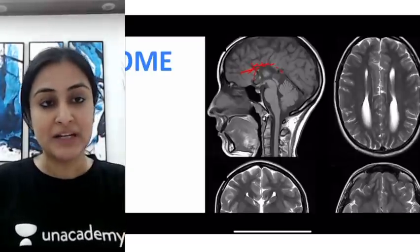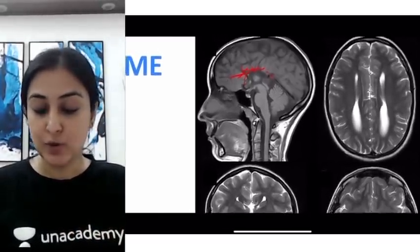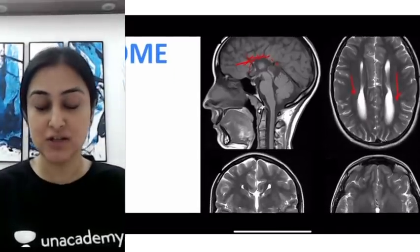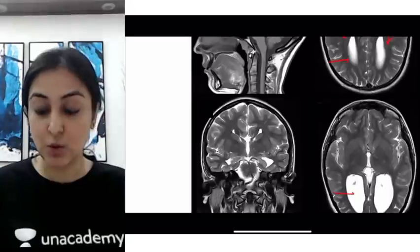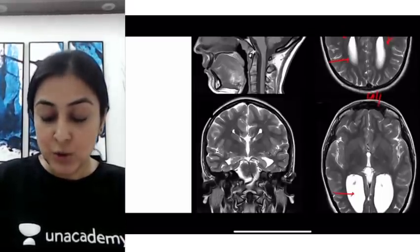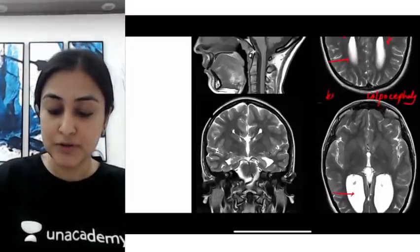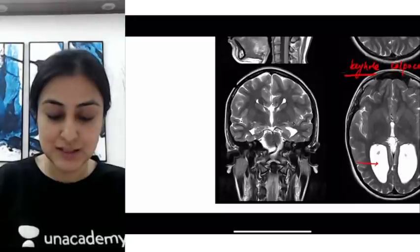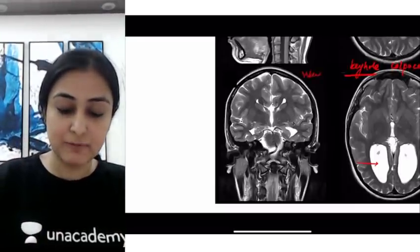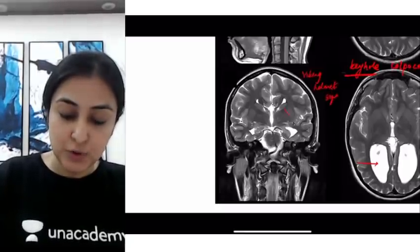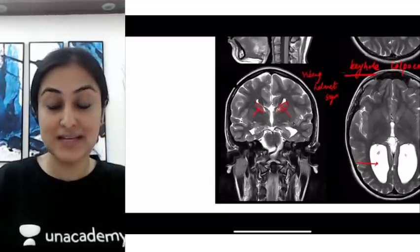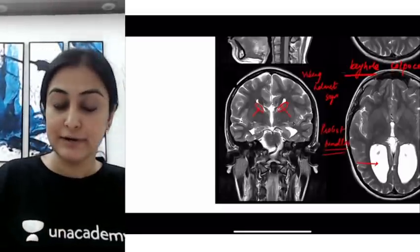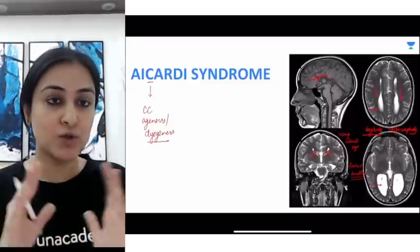In the axial plane, a very important finding is that both ventricles are parallelly oriented. The posterior horns — the occipital horns — are more dilated, referred to as the keyhole appearance, also called colpocephaly. On the coronal image, the horns appear like a Viking helmet — the Viking helmet sign. You also find abnormal white matter bundles called Probst bundles, which are seen in place of the corpus callosum commissural fibers.